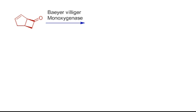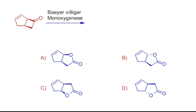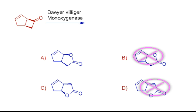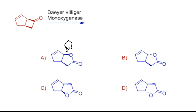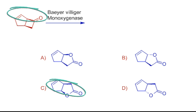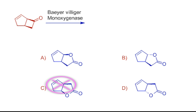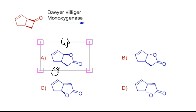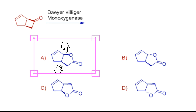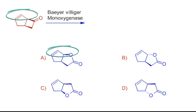This ketone on treatment with Baeyer-Villiger monooxygenase will undergo Baeyer-Villiger oxidation. Options B and D show inversion of stereochemistry compared to that in the reactant, so these two options are nullified. Options A and C both show retention of configuration and migration of the more substituted carbon. If we carefully examine option C, we can see the position of the double bond is changed. Thus option C is cancelled. Option A is the correct answer, with retention of configuration, migration of more substituted carbon, and no change in position of the double bond.